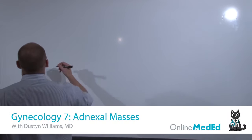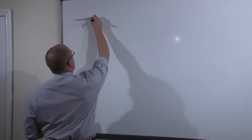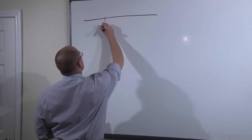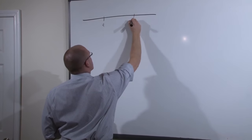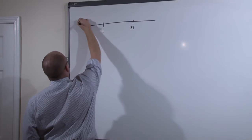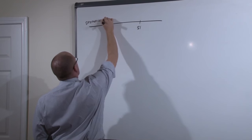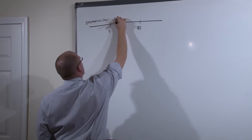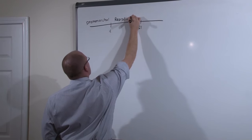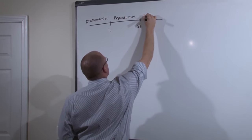Let's start talking about adnexal masses. For most of the diseases we cover, we need to stratify them into age groups based on puberty and menopause: premenarchal, reproductive, and postmenopausal.